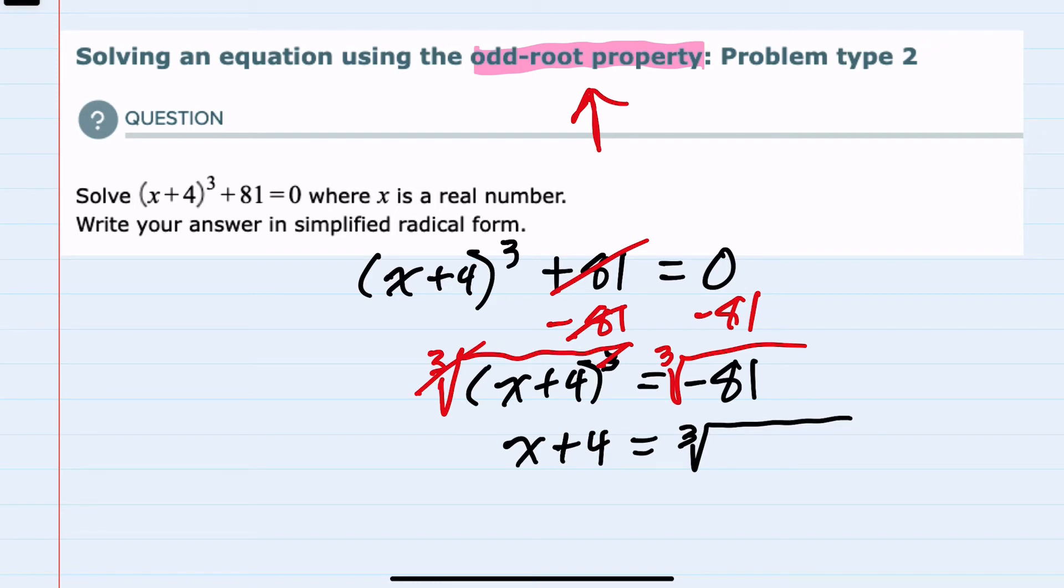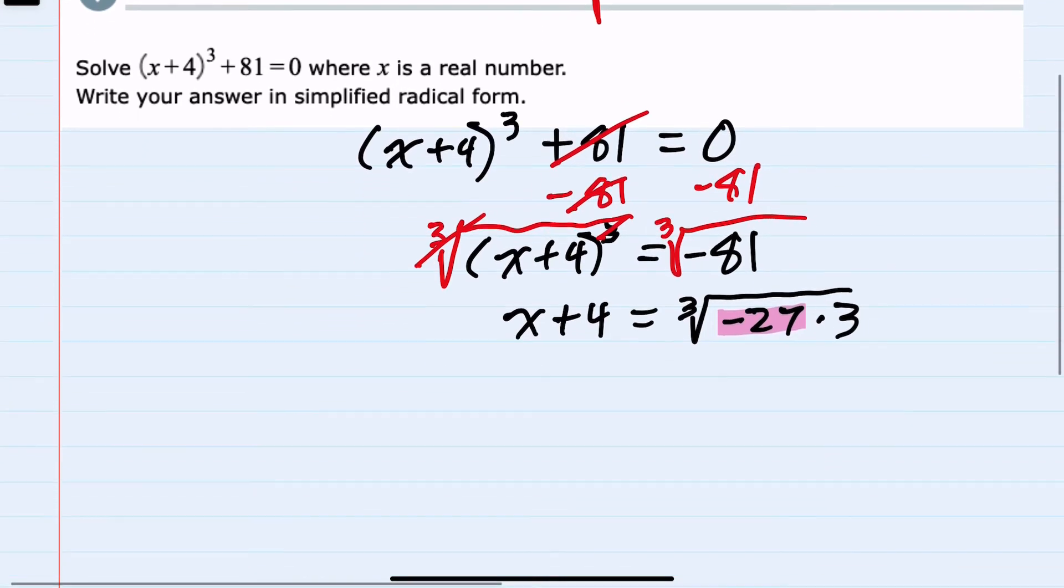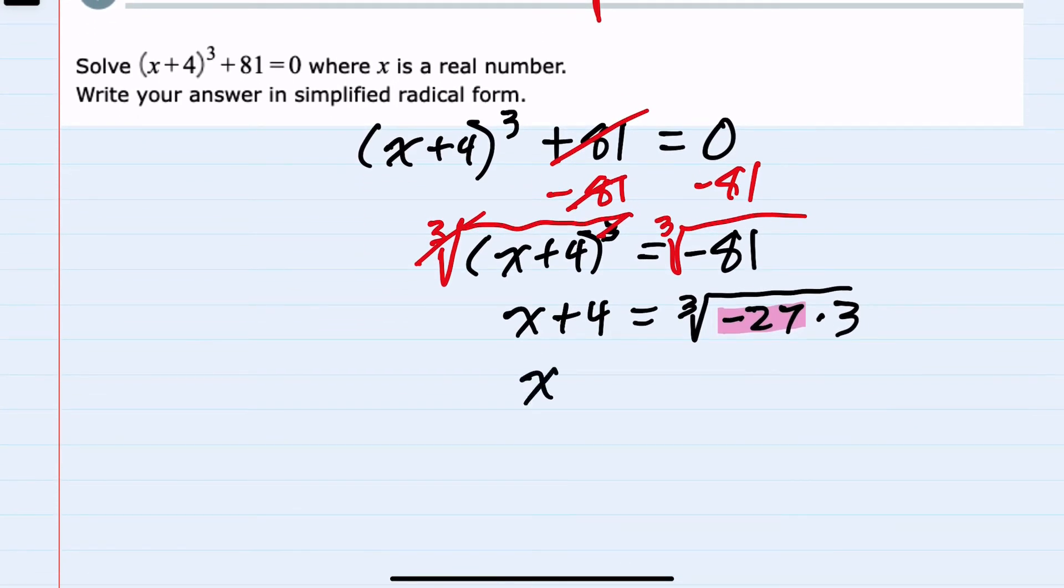I can rewrite -81 as -27 times 3. The reason I chose 27 is because that's a perfect cube, and I can bring that outside of the radical. Simplifying, I have x+4 equals the cubed root of -27, which is -3, and then I would still have the cubed root of the remaining 3 inside the radical.